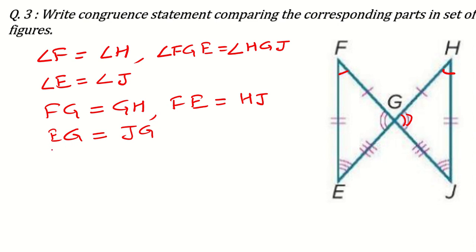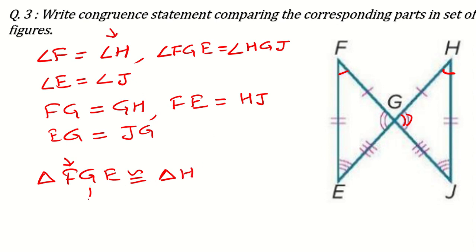Now what is the congruency statement? Triangle FGE is congruent to triangle... F is the first letter and F equals H, so H is first. G is second and G equals G, so G is second. E is third and E equals J, so J is third. Triangle FGE is congruent to triangle HGJ. Like this you can write the congruency statement.